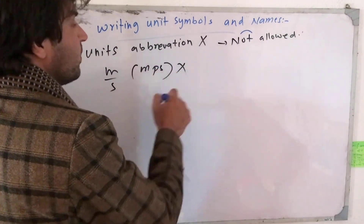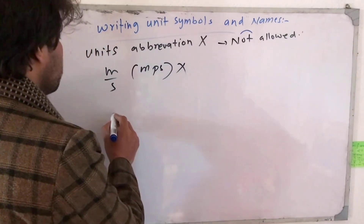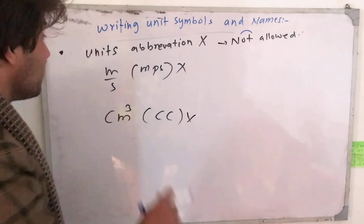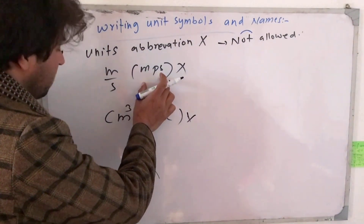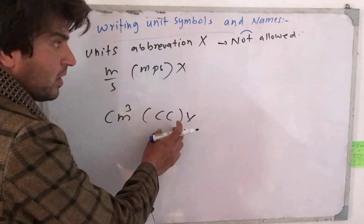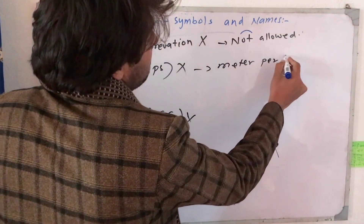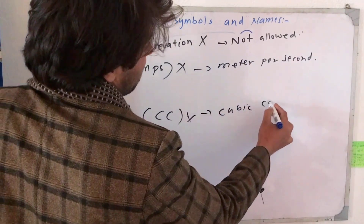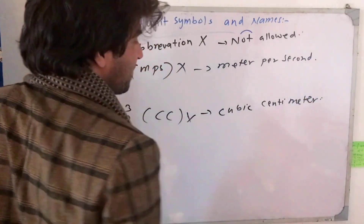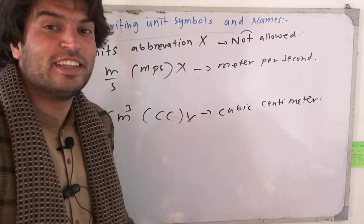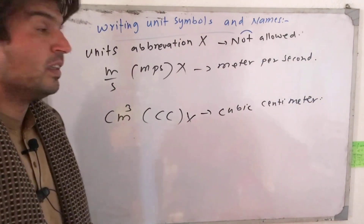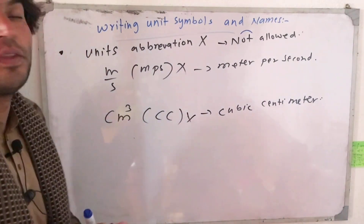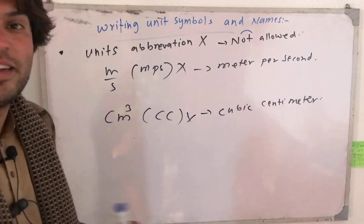Meter per second is acceptable. However, cubic centimeter written as CC is not allowed — the abbreviation CC is not a proper SI notation. Centimeter cube written as CC is not allowed. The full notation must be used. Abbreviations like CC are not allowed — this is clearly stated. Any abbreviated non-standard forms are not permitted.